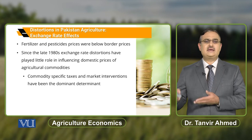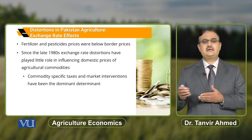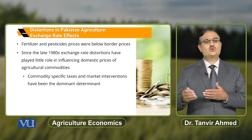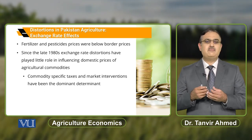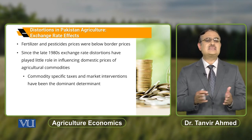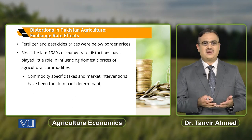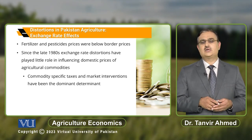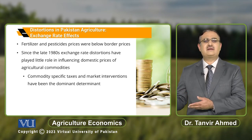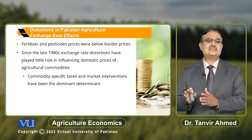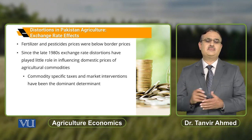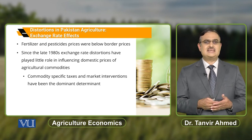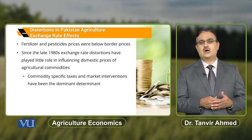Since the late 1980s, exchange rate distortions have played little role in influencing the domestic prices of agricultural commodities. From this period onward, commodity-specific taxes and market interventions by the government have become the dominant determinants of agricultural commodity prices, with exchange rate distortions having minimal impact.